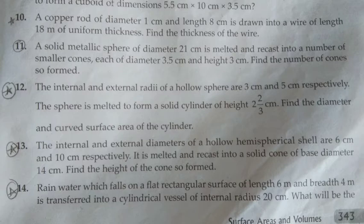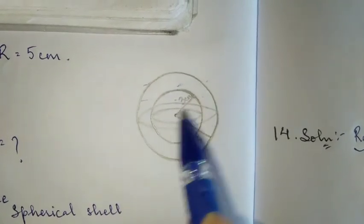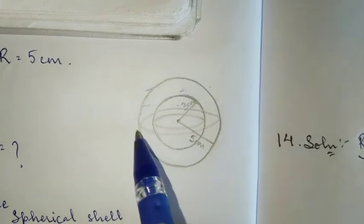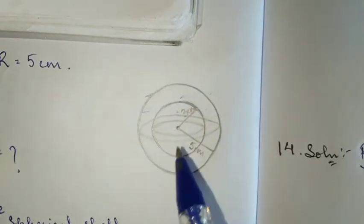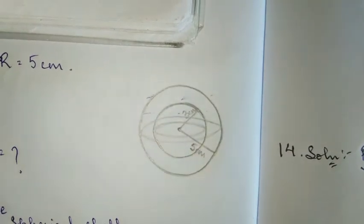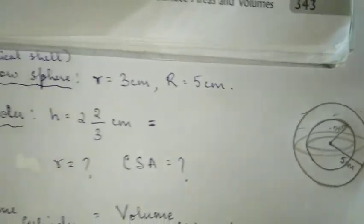Moving on to question number 12. The question says: The internal and external radii of a hollow sphere are 3 centimeter and 5 centimeter respectively. The sphere is melted to form a solid cylinder of height 2 and 2/3 centimeter. Find the diameter and curved surface area of the cylinder. A hollow sphere is a spherical shell - it has one radius on the inside and one radius on the outside.